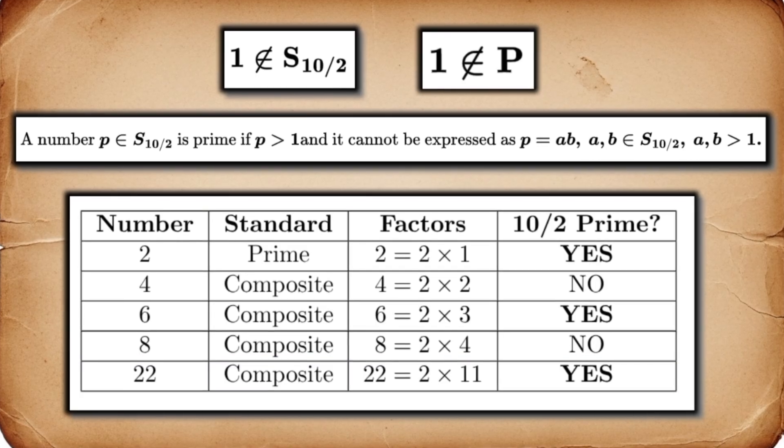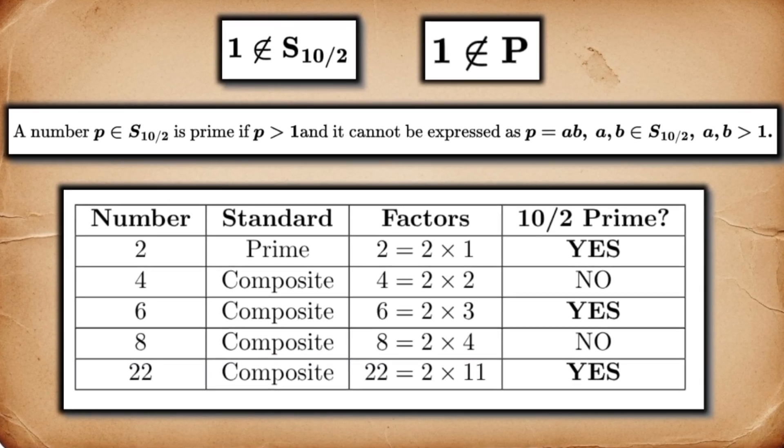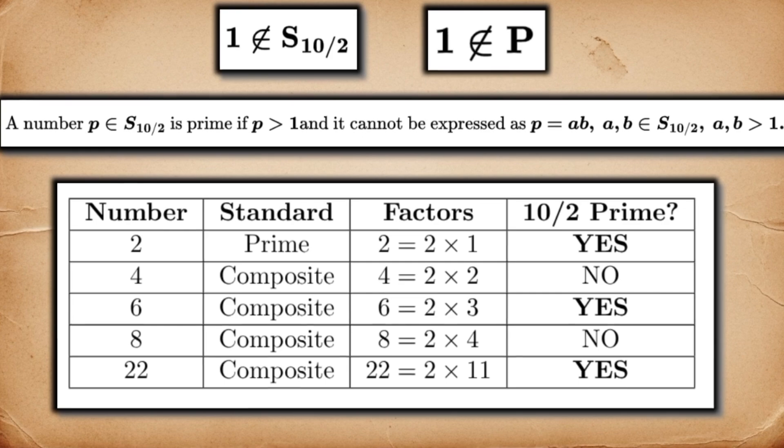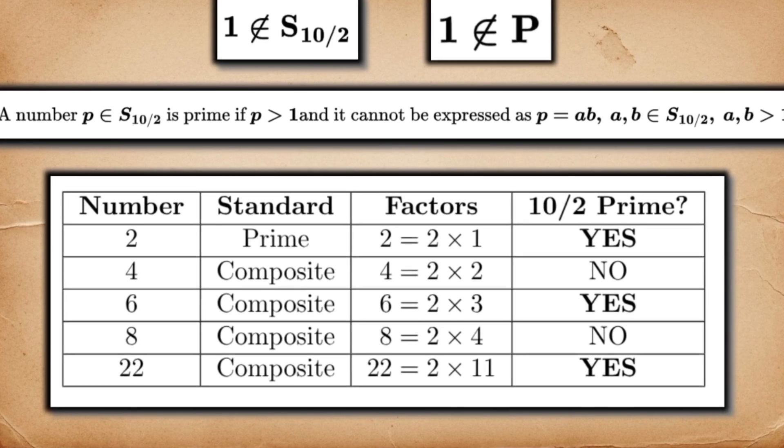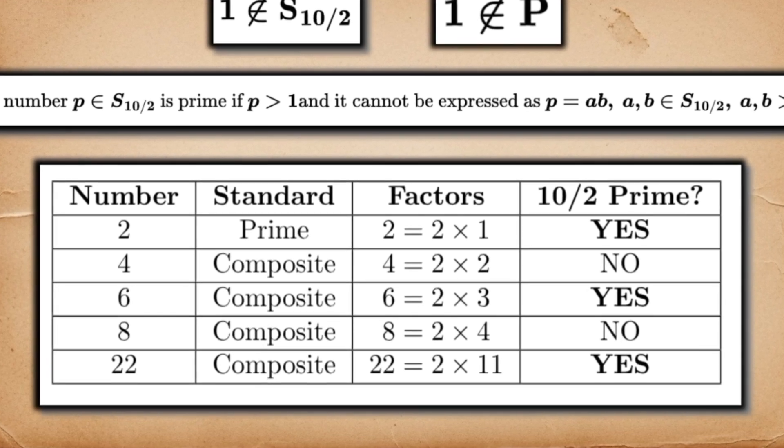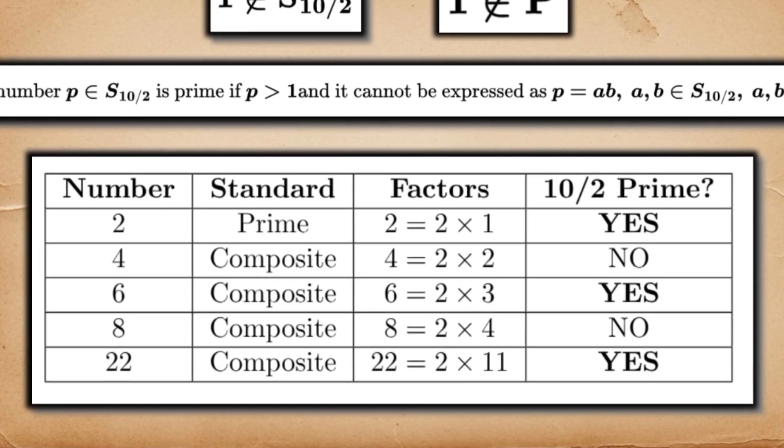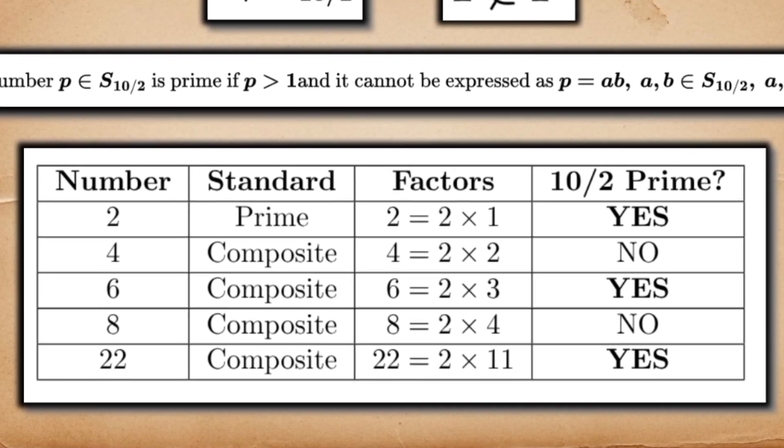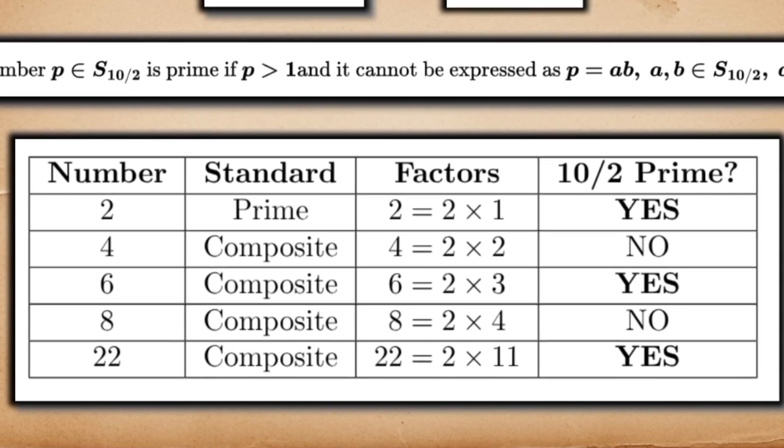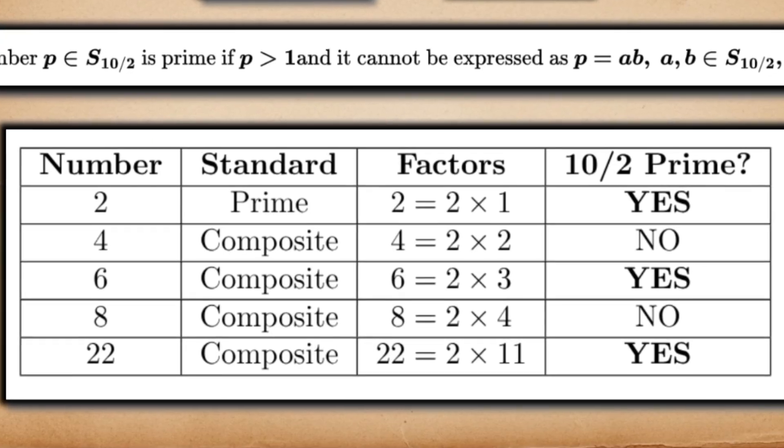This is the magic of the 10 over 2 system. It creates a completely new list of prime numbers, based on the constraints of its own universe. Numbers like 6, 22, 26, and 28, which we've always thought of as composite, are the building blocks of this new numerical world.